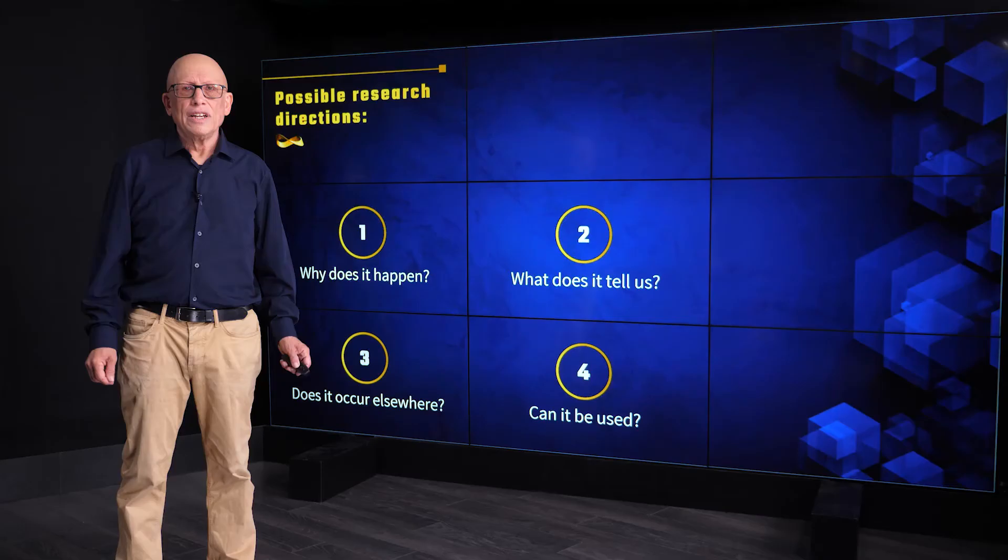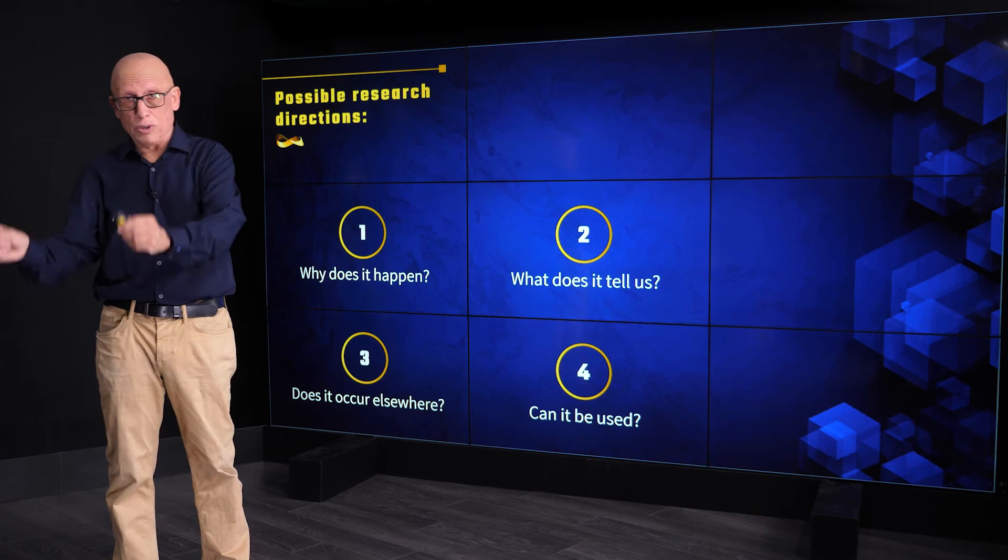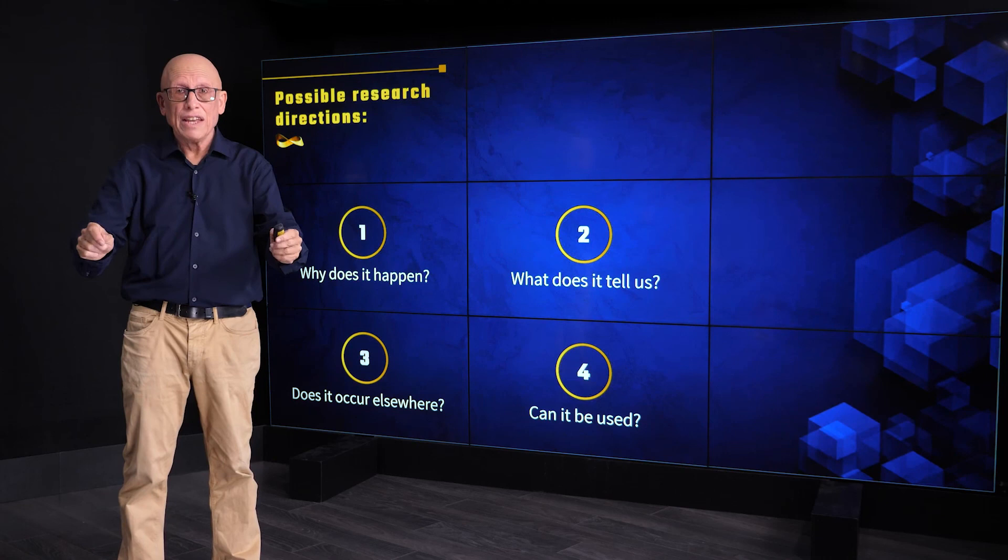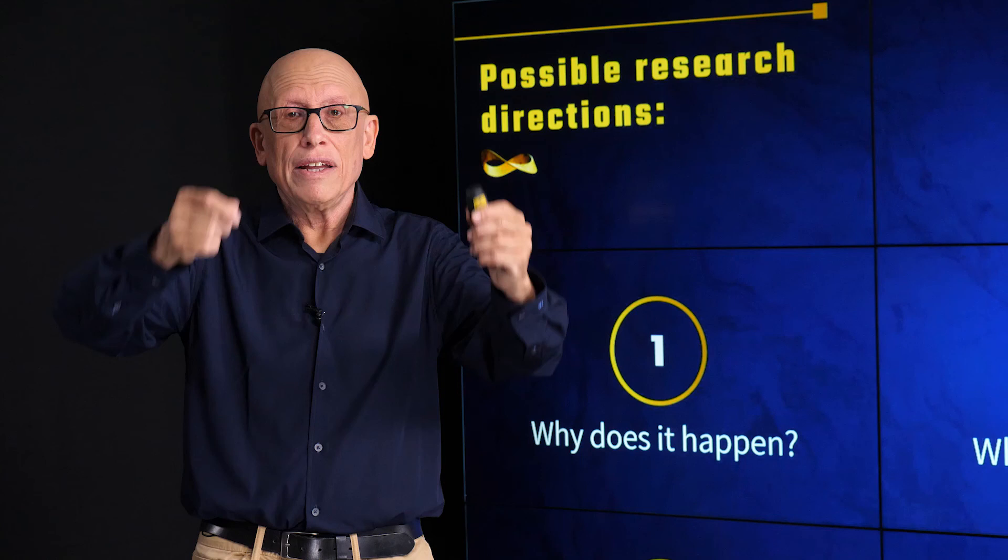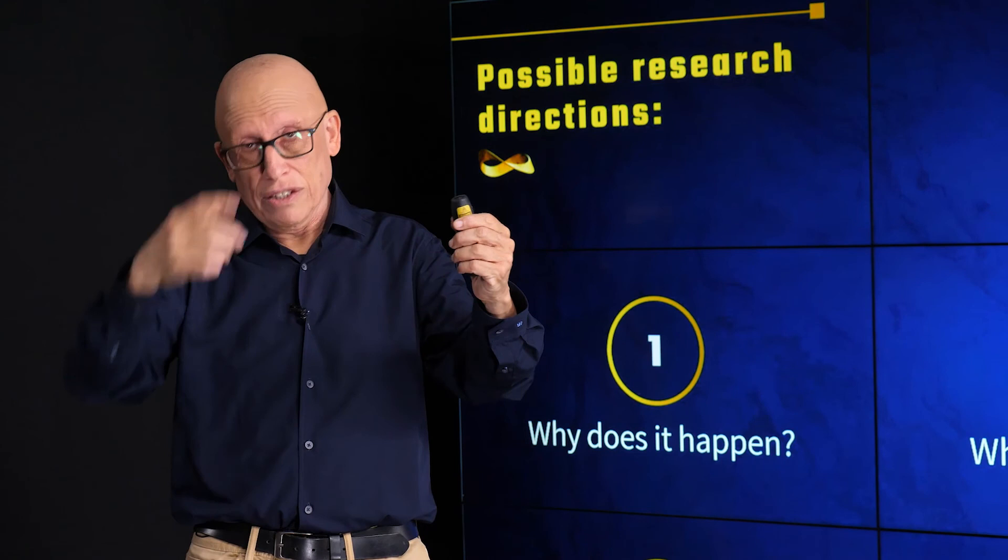So to summarize this segment, we saw the quantum Hall effect. We saw the integer quantum Hall effect. We saw the fractional quantum Hall effect. We saw the precision, the universality, the reproducibility. And we saw how fundamental it is, having the Hall resistivity quantized to h over e squared, two fundamental constants divided by nu, with nu being a very clean dimensionless number. Thank you. I hope to see you in the next segment.